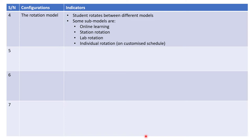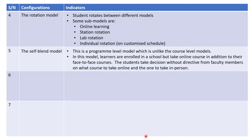Now we have the self-blend model. This one is quite different from the other models, which are course models — this is a program model. In this model, learners are enrolled in a school but take online courses in addition to their face-to-face courses. The students make decisions without directive from a faculty member on what course to take online and what to take in-person. So this is a program-based model, unlike the other course-based models.